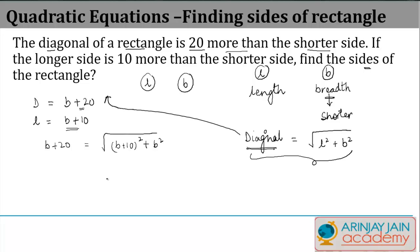Squaring both sides: (B+20)² which is B² + 400 + 40B equals (B+10)² + B². Now B plus 10 whole square equals B² + 100 + 20B plus B².